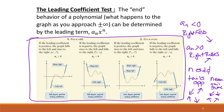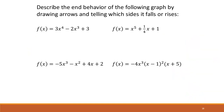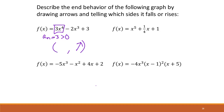Let's look at the end behavior of some problems. For the first one, our leading term is 3x to the fourth — the one with the highest power. So aₙ is 3, which is greater than zero, meaning the right side is going to increase. And n is four, which is even, so both sides go in the same direction — both going up.